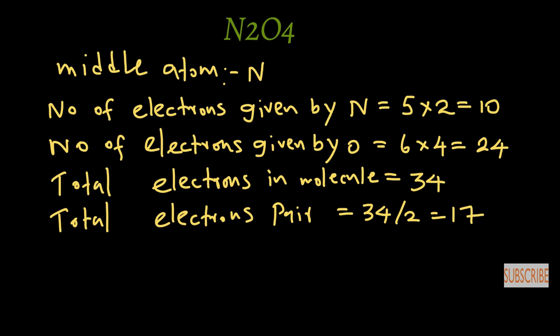Now consider the sketch figure of N2O4. Nitrogen is the middle atom, and there is a nitrogen–nitrogen sigma bond. There are four oxygen atoms, so each nitrogen makes bonds with two oxygen atoms, giving the skeleton structure.